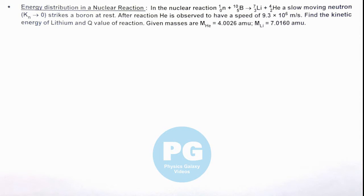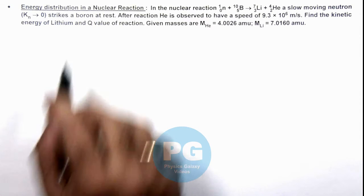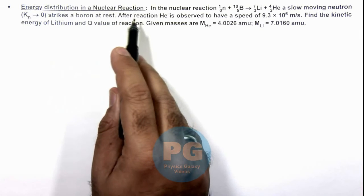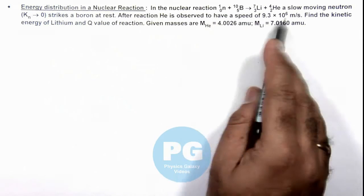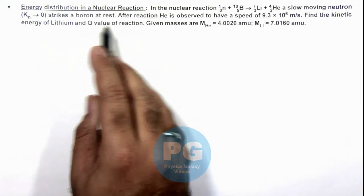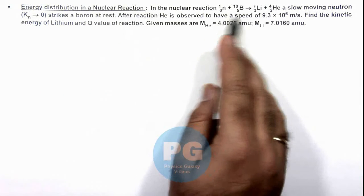In this illustration, we'll discuss the energy distribution in a nuclear reaction. Here we are given that in the reaction shown, a slow moving neutron (Kₙ ≈ 0) strikes a boron at rest, which we can see here.